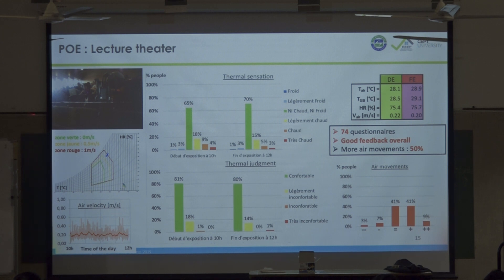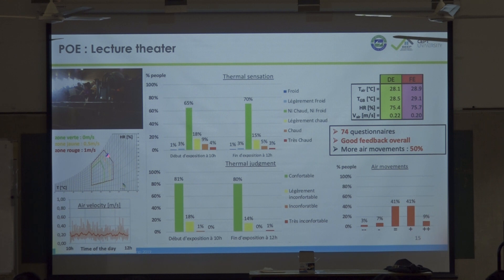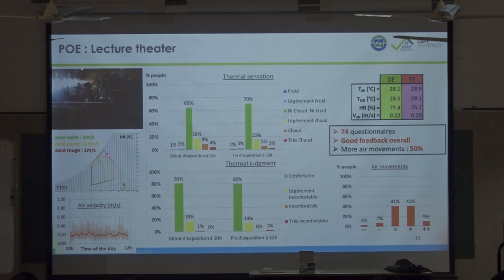We did a post-occupancy evaluation — measuring black globe temperature, air velocity, air temperature, and humidity. The survey was conducted in February, which is summer and hot. The conditions during the survey were close to the larger Givoni zones, meaning in theory we need one meter per second to feel comfortable.